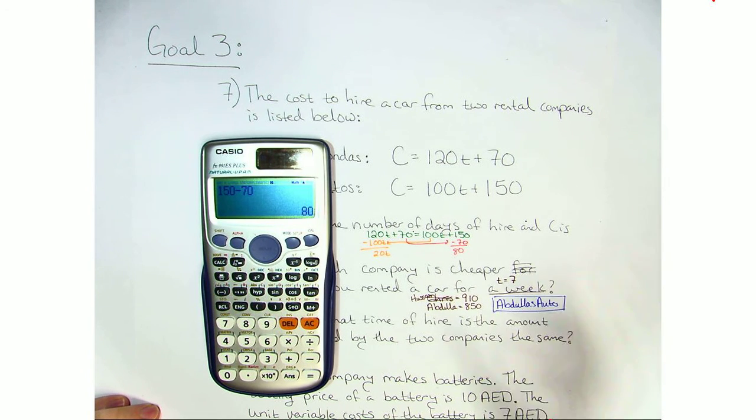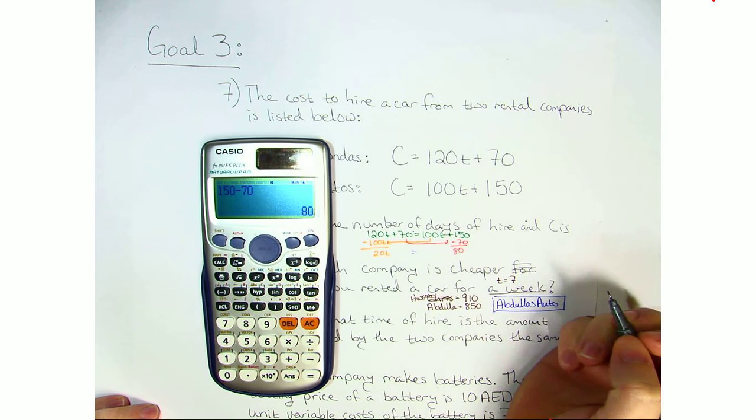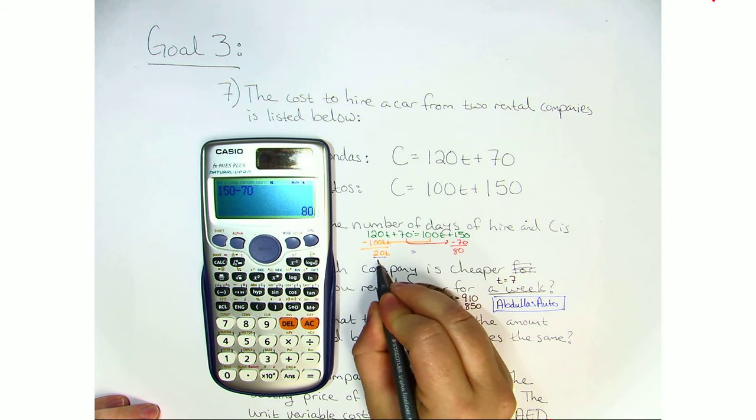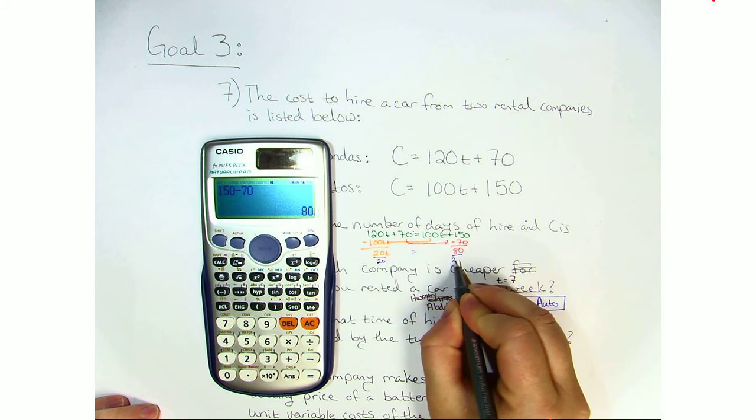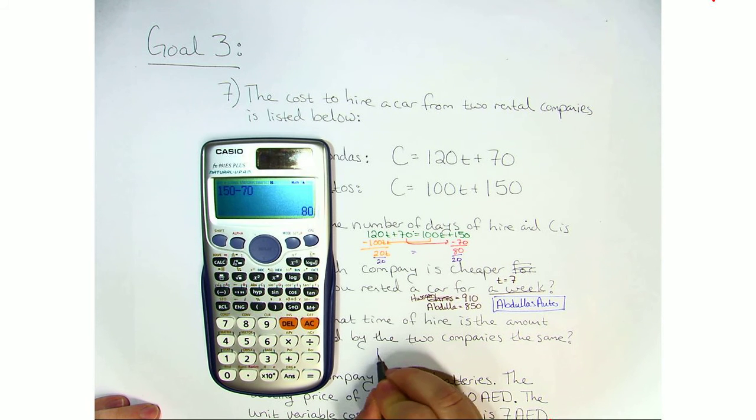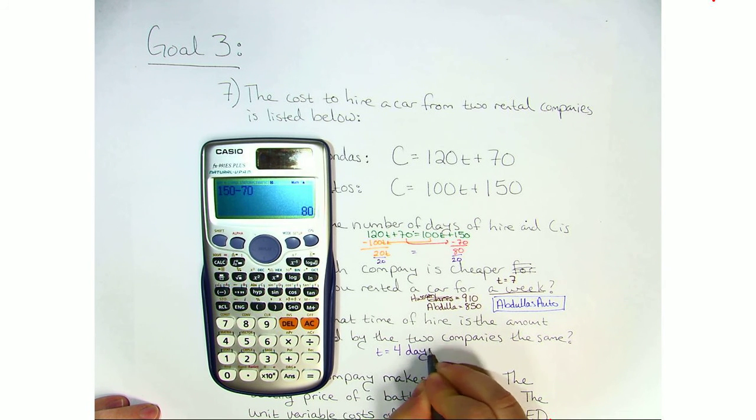So what we have is 20T equals 80. In order to solve this, we divide both sides by 20 and we get that the time is 4 days.